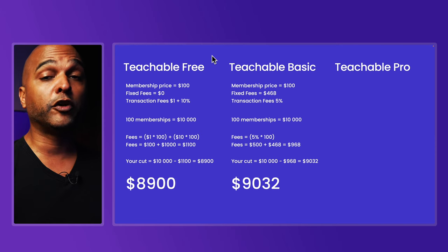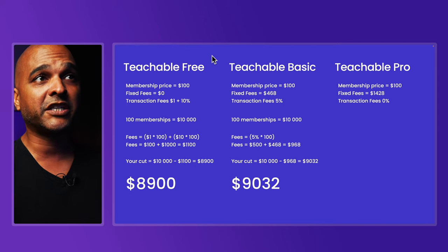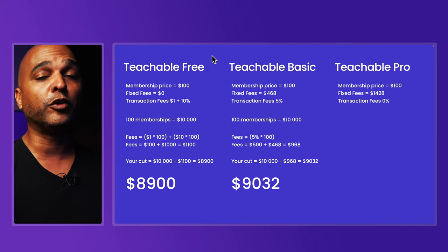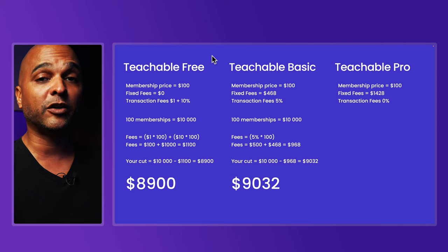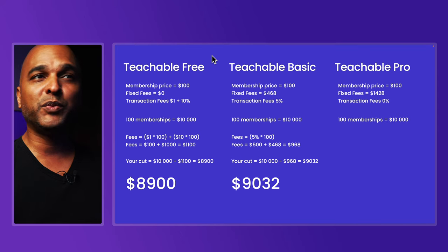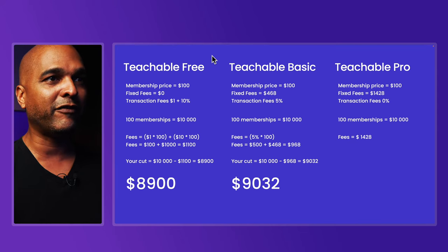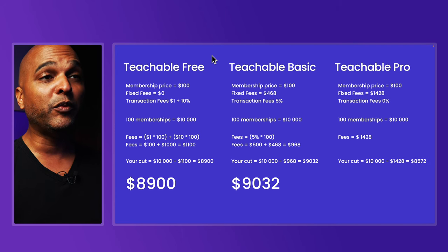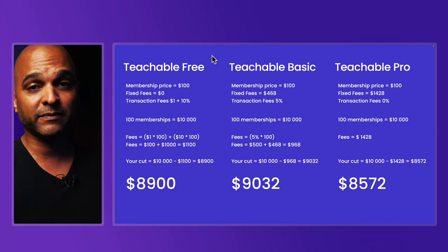That's slightly better. Now let's move to the Pro plan. The good news is there are no transaction fees — 0% per transaction — but we have fixed fees of $1,428, which is $119 per month. With the same 100 memberships at $100 each giving $10,000 in revenue, after withdrawing the fixed fees, our cut is only $8,572. Ouch!